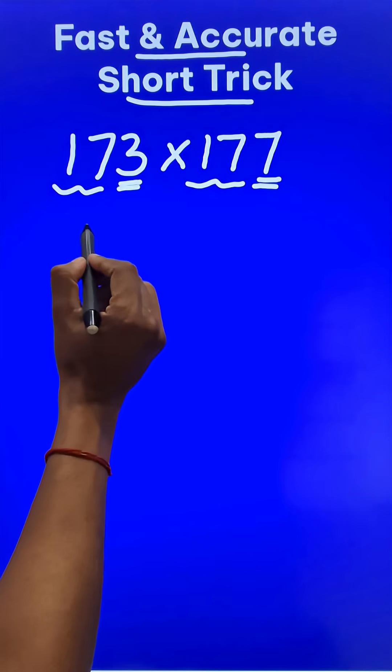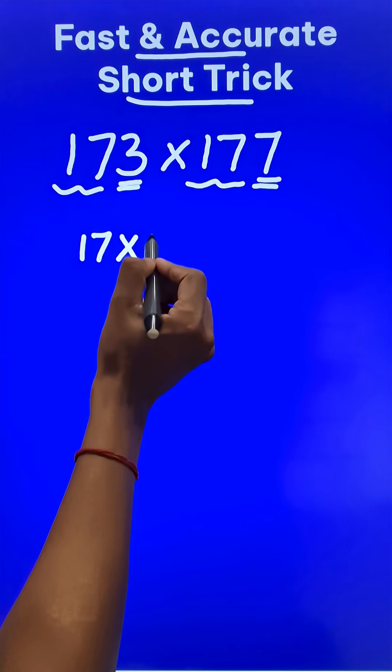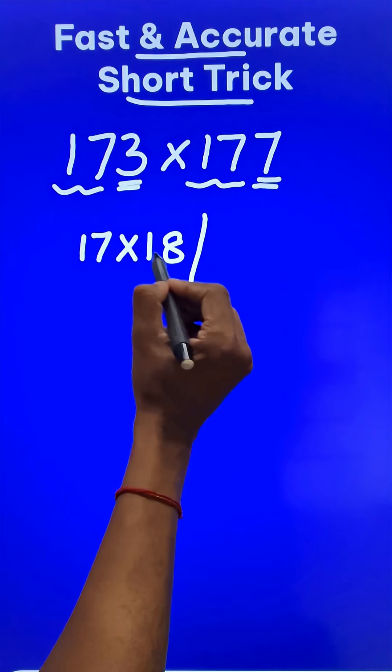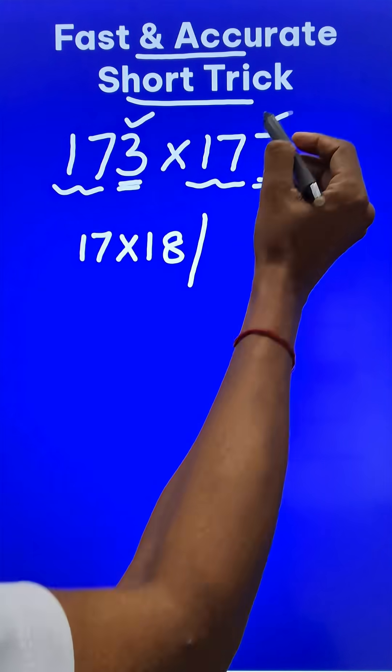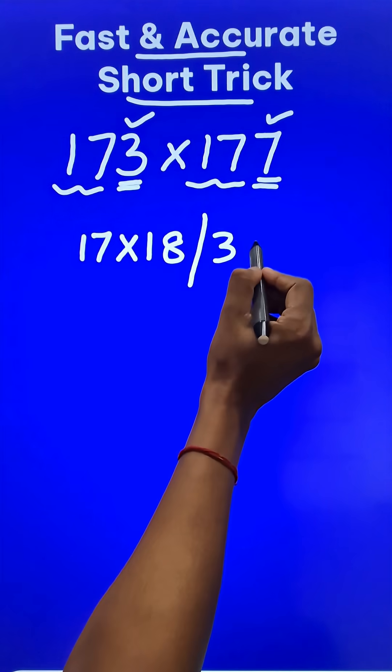So the first part is 17. You just have to do 17 times its consecutive number 18, and then the last two digits, 3 and 7, are to be multiplied and that will give you 21.